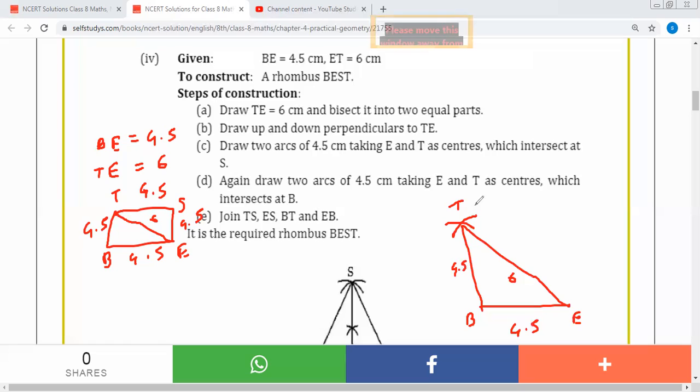After point T, keep 4.5 cm to E. Join S to E. This will be 4.5 cm and this will be 4.5 cm.